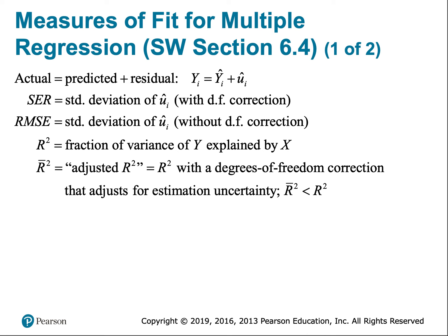The first thing we need to do is write down our nomenclature. Recall that the actual or observed value of the outcome variable yi is equal to the predicted value y-hat plus the OLS residual ui-hat. The standard error of the regression is the standard deviation of the OLS residual and it has a degrees of freedom correction, while the root mean squared error can also be thought of as a standard deviation of the OLS residual but does not have a degrees of freedom correction.